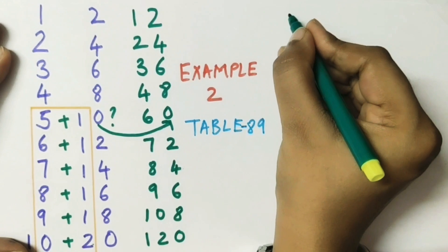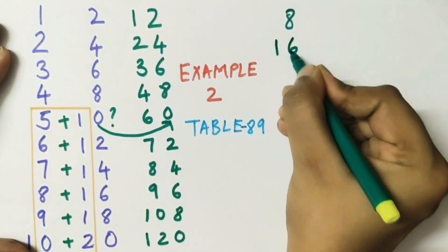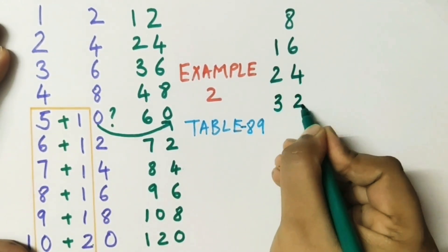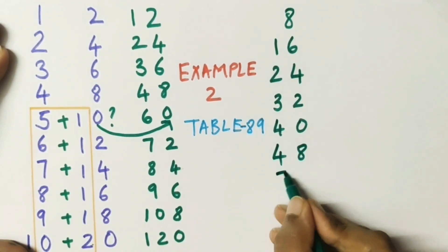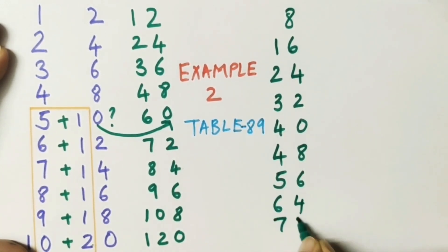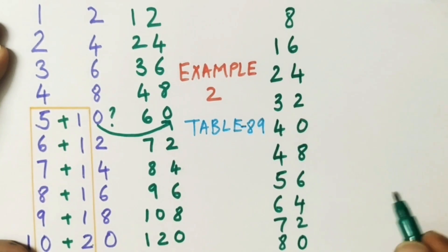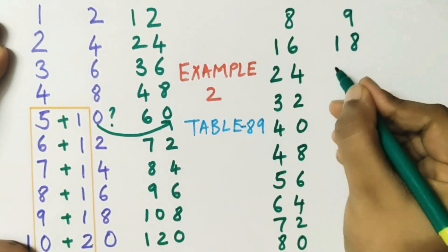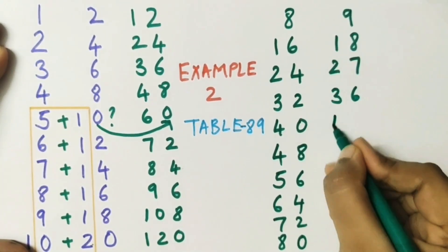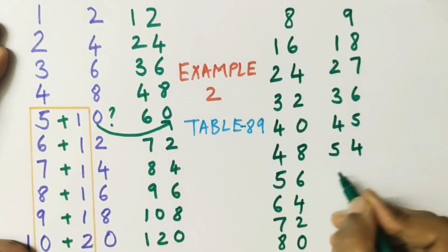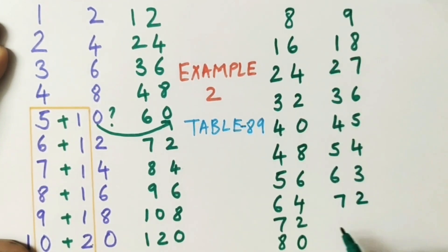Here we are getting four numbers now. What will we do? First we will write 8, 9 equals 89, then we will pick up 8 and put it here.